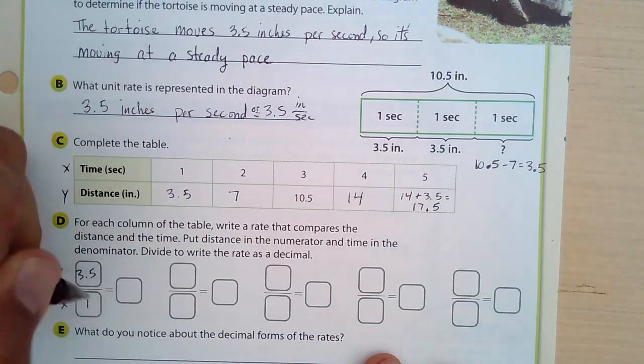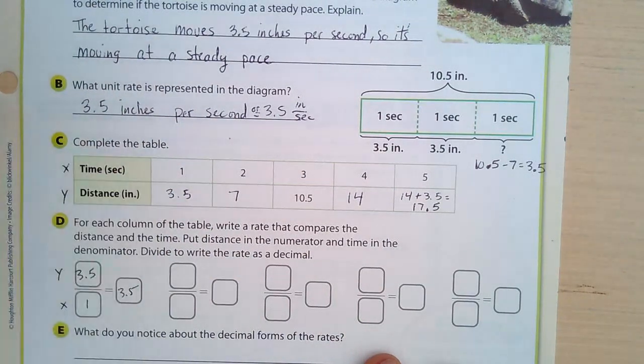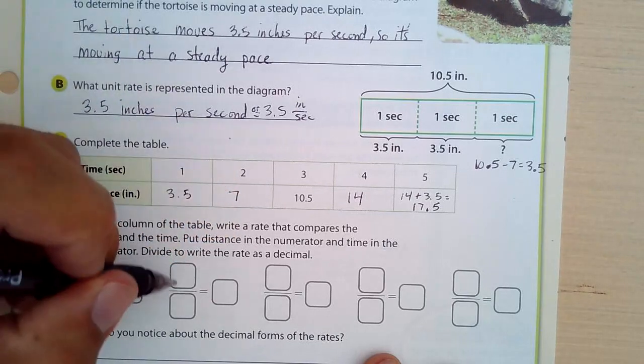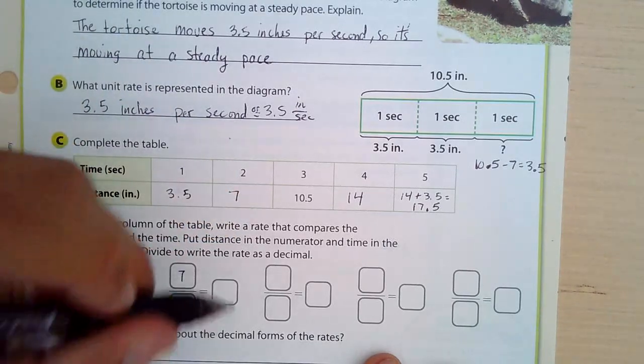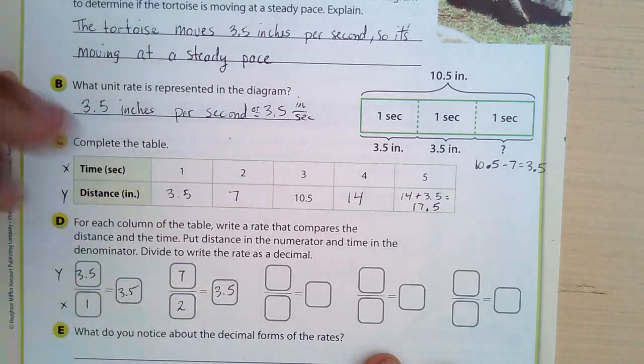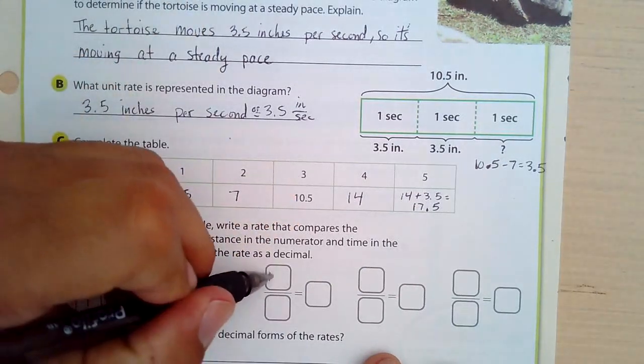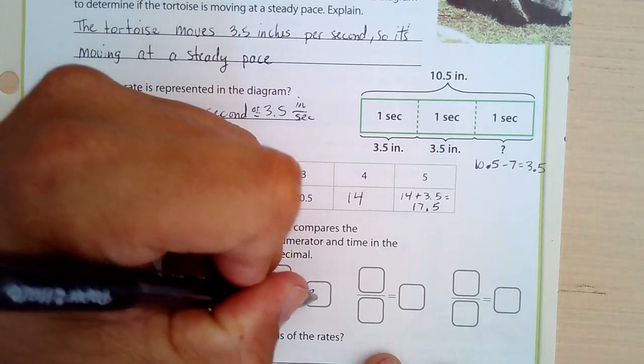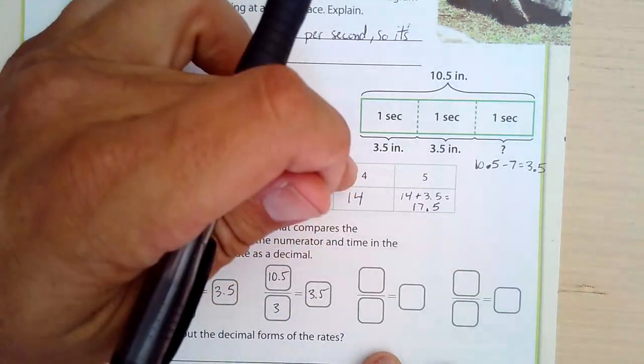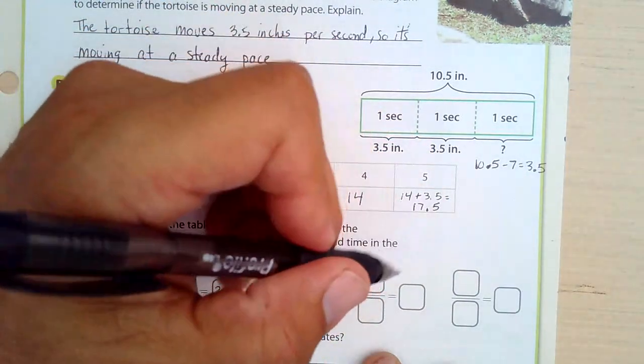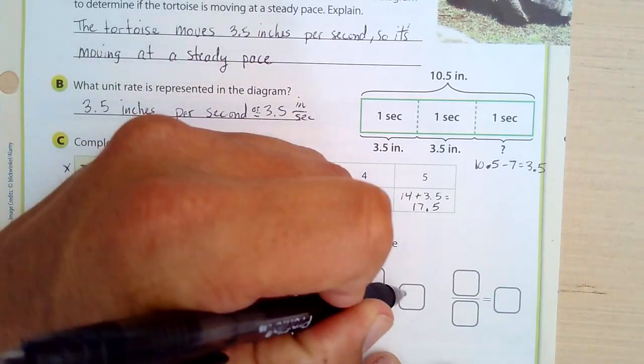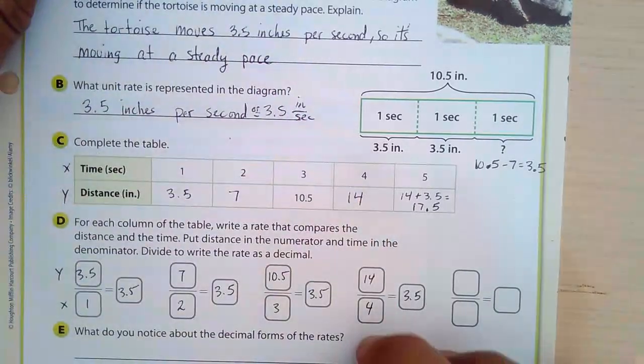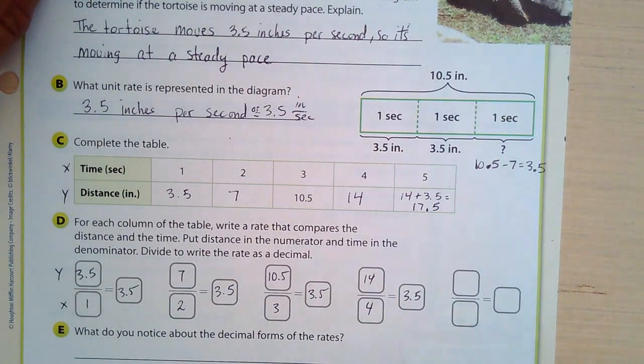So our y's are going to go on top and our x's are going to go on the bottom on each of these. So we'll take the first one, 3.5 over 1, 3.5 over 1, and that equals 3.5. And 7 over 2, 7 over 2, 7 divided by 2 is also 3.5. And 10.5 over 3, 10.5 over 3, that is also 3.5. And 14 divided by 4. So 14 divided by 4, that is 3.5. You can check it with a calculator.